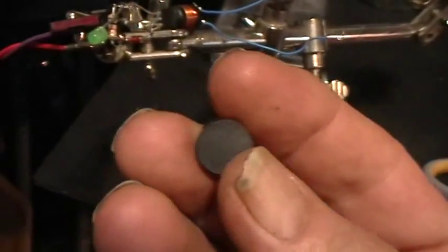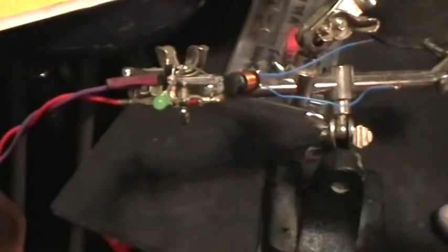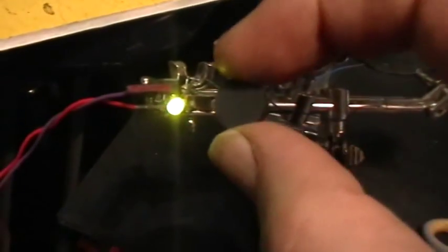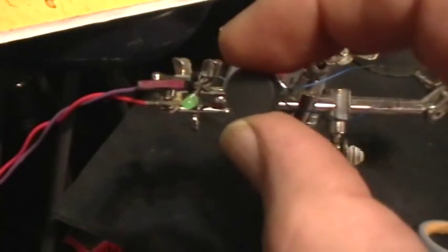So here's a little magnet. And when I present one pole of the magnet to the Hall Sensor, it switches on and stays on until I present the other pole of the magnet to the sensor.